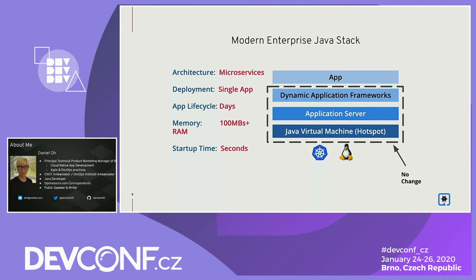In the modern Java stack things are changing. Single applications like Spring Boot and Node.js have shorter deployments, smaller memory, and startup time of maybe seconds. But the problem is: dynamic application frameworks still have an embedded application server — embedded Tomcat, Netty, Jetty — and the JVM hasn't changed, even though we've moved to Kubernetes clusters.